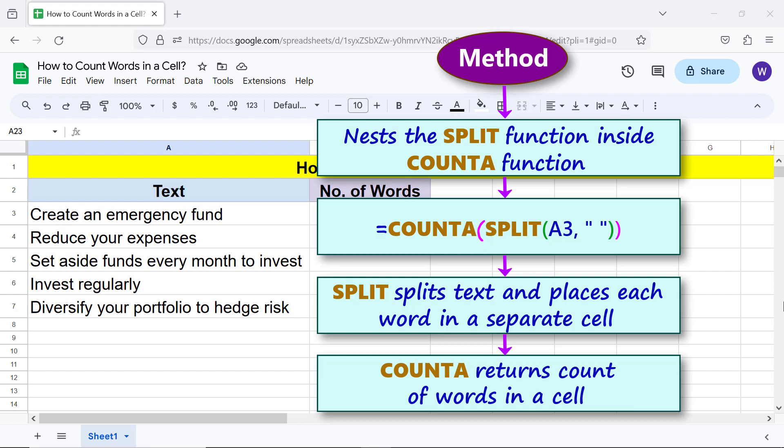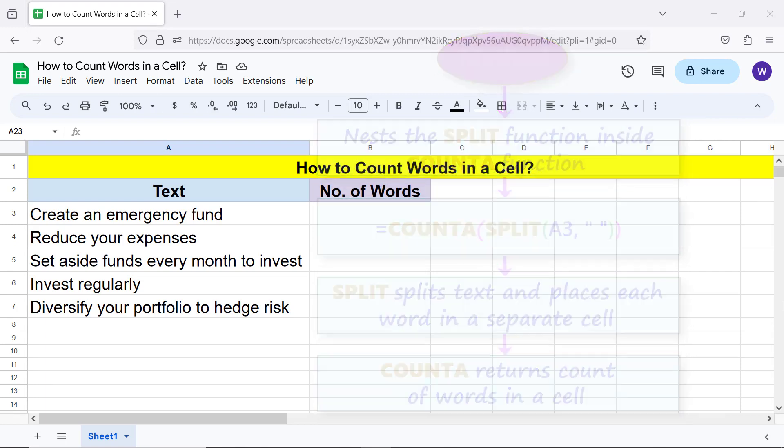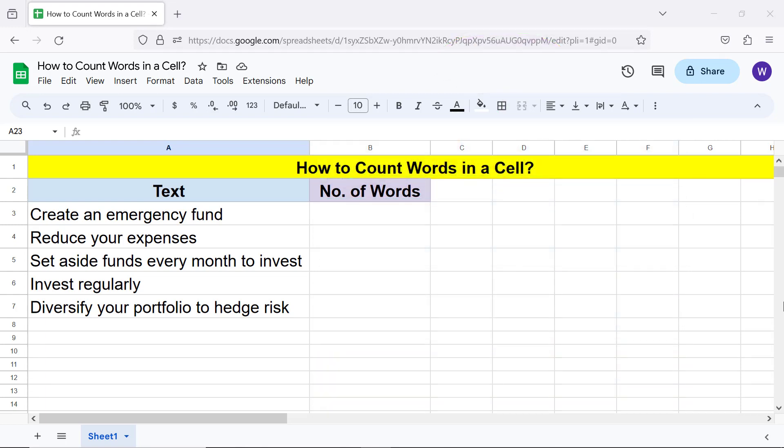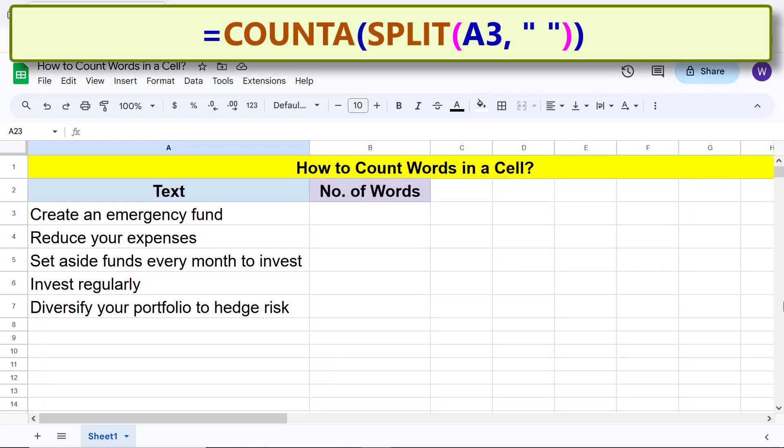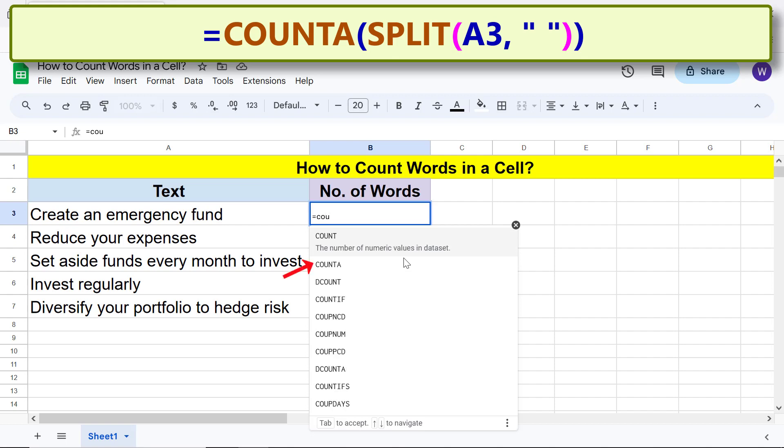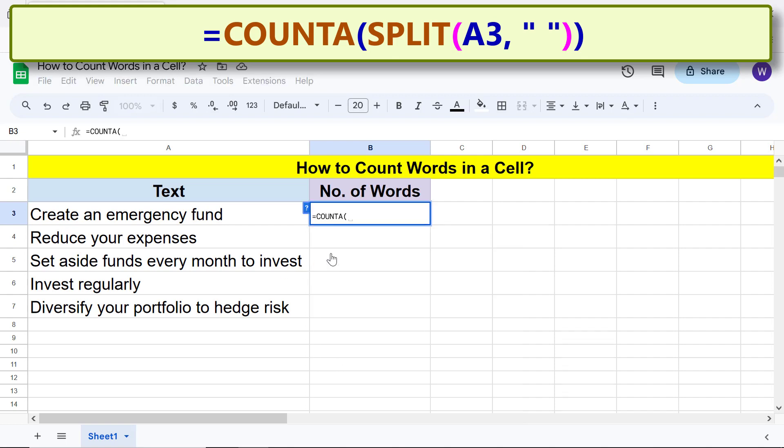Alright, here's the COUNTA SPLIT combo formula. Going forward, let me type the formula in this cell. First type the equal to symbol, C-O-U and select COUNTA. Now let's nest the SPLIT function. Type S-P-L and select SPLIT.